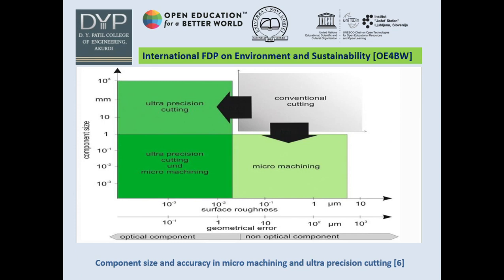This diagram shows component size and accuracy in micro-machining and ultra-precision cutting. On the x-axis, surface roughness with geometrical error is defined, while on the y-axis, component size is shown. When component size goes up to the ultra-precision level, surface roughness approaches near zero. When micro-machining is applied with minimum component size, combining both ultra-precision cutting and micro-machining leads to exact fabrication at the micro-level — that is micro-fabrication technology — suitable for optical components.